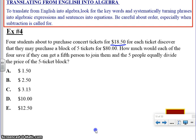Then they go on to discover that they may purchase a block of five tickets for $80. So there is a deal: five tickets for $80. How much would each of the four save if they can get a fifth person to join them, and the five people equally divide the price of the five ticket block, which is $80?